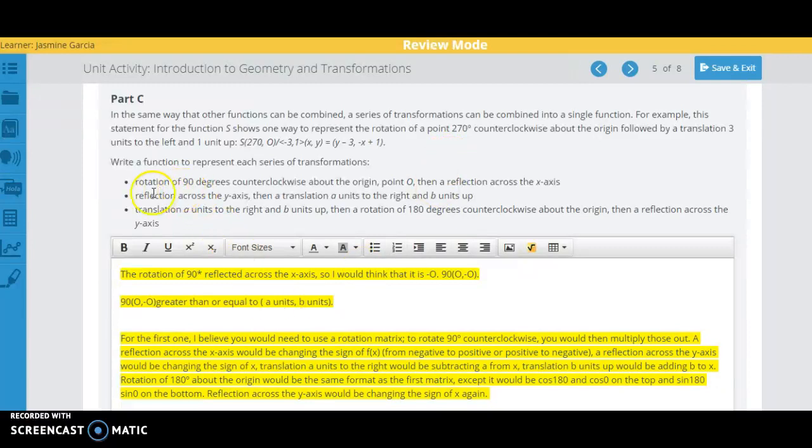We want to do multiple things to it and then get something as our final answer after different transformations have happened. So in this first one, we're going to rotate 90 degrees clockwise and then you're going to get an answer.